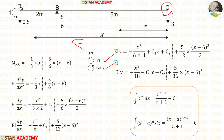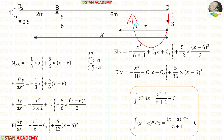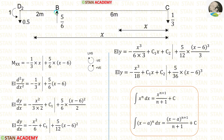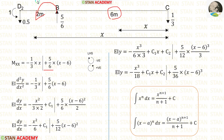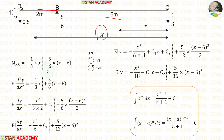RC is acting towards the section in the clockwise direction, so it will be negative and the distance is X, giving minus 1 upon 3 into X. Now let us consider RB — it is acting in the anticlockwise direction, so it will be positive. We are taking moment beyond 6 meters, so we have to consider the second section. The distance here is X minus 6, giving 5 upon 6 into (X minus 6). Both of these terms should be separated by dotted lines.